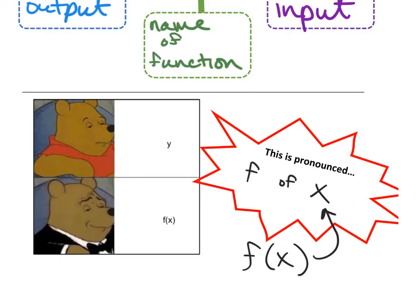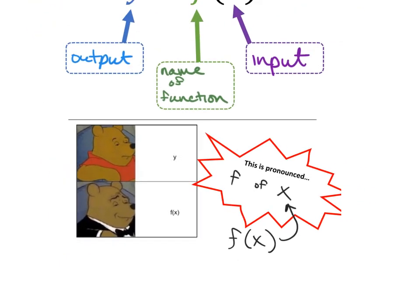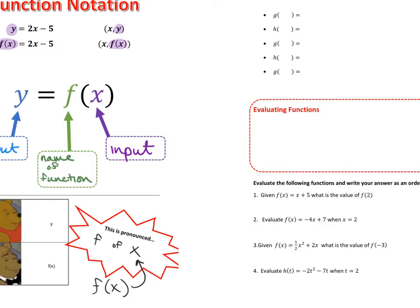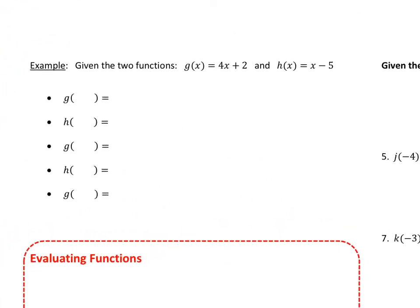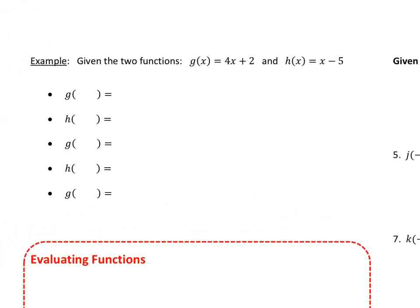So let's see function notation in use. The reason we use function notation is because it allows us to talk about multiple functions at the same time since we've given them names. For example, here we have g of x equal to 4x plus 2 — that's my first function, its name is g, its inputs are x's. My second function is called h of x, named h, with inputs of x's, which is why you see x's in the formula.